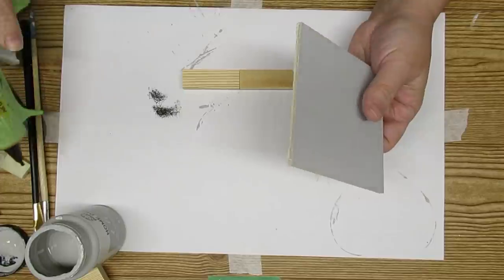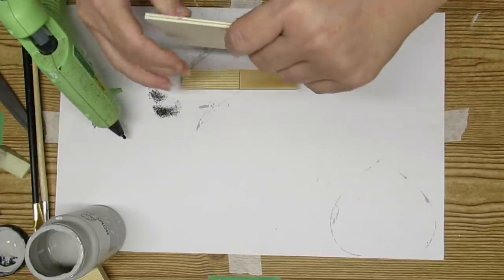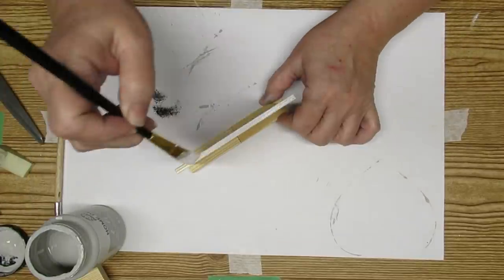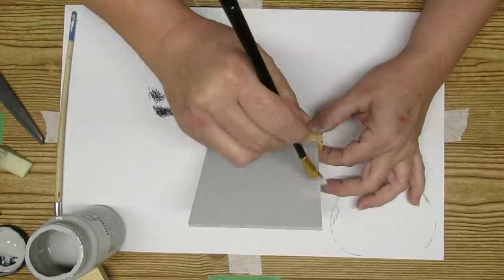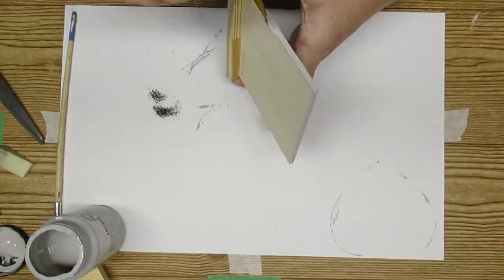A little tip I can give you is when you're doing little projects with wood, make sure that you glue wood to wood. Don't paint everything and then glue it together because sometimes the paint will interfere with the hold.